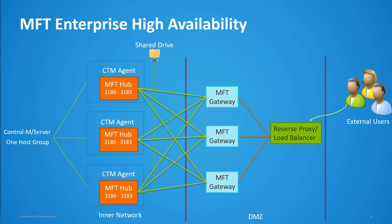A few things to keep in mind: you can only have one cluster per Enterprise Manager. All nodes must be on Control-M version 9.0.20 or later. All Control-M agents with MFT hubs must be on the same platform and should be added under a single host group. Configuration data between MFT hubs are synchronized using Apache Zookeeper, and ports 3180 to 3183 need to be open in the firewall between all the Control-M agents involved in the cluster. Zookeeper is only started when MFT hub is in cluster mode. There is also a need for a shared drive accessible between all the Control-M agent nodes with MFT hub, and the Control-M agent user should have permission to read and write on the shared drive.